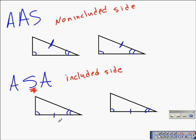The triangles on the bottom are congruent because of angle-side-angle. The triangles on the top are congruent because of angle-angle-side.